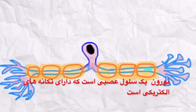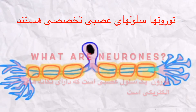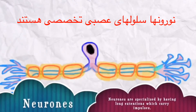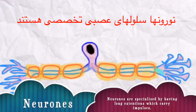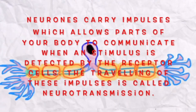What you can currently see on the screen is a neuron. Now, what are neurons? Neurons are specialized cells. They are specialized by having long extensions which are used to carry impulses. Neurons carry impulses which allows parts of your body to communicate when a stimulus is detected by the receptor cells. The traveling of these impulses is called neurotransmission.